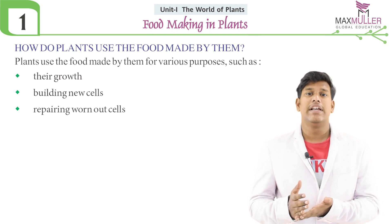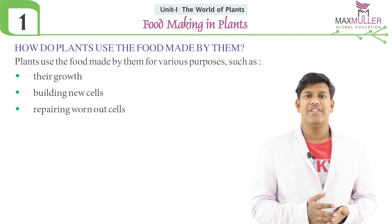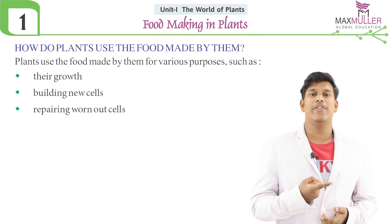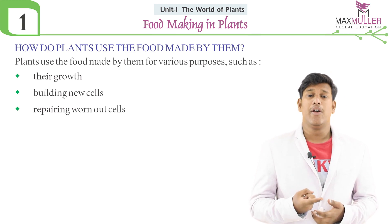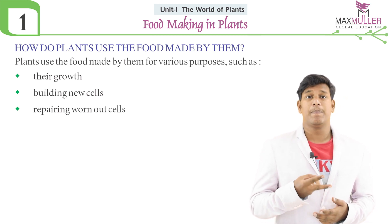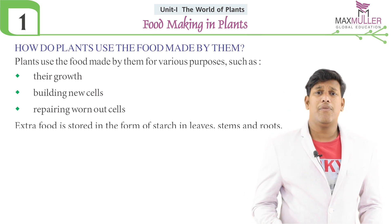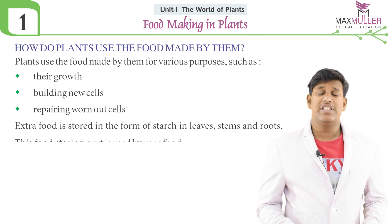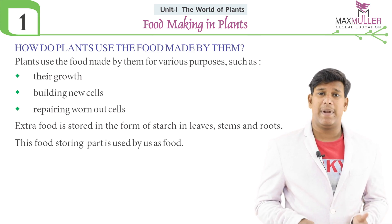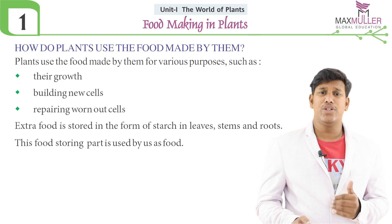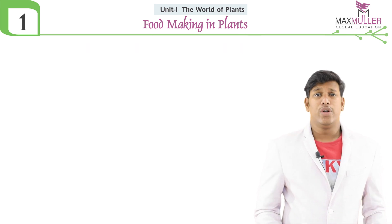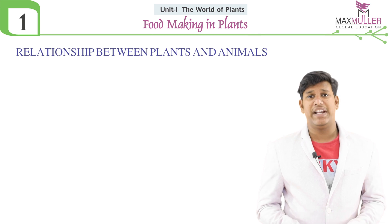Have you ever thought how plants use their prepared food? Plants use their food for their own growth, reproduction, and for worn-out cells. Extra food stored in the form of starch in all the tissues of the plant is used as food by humans.